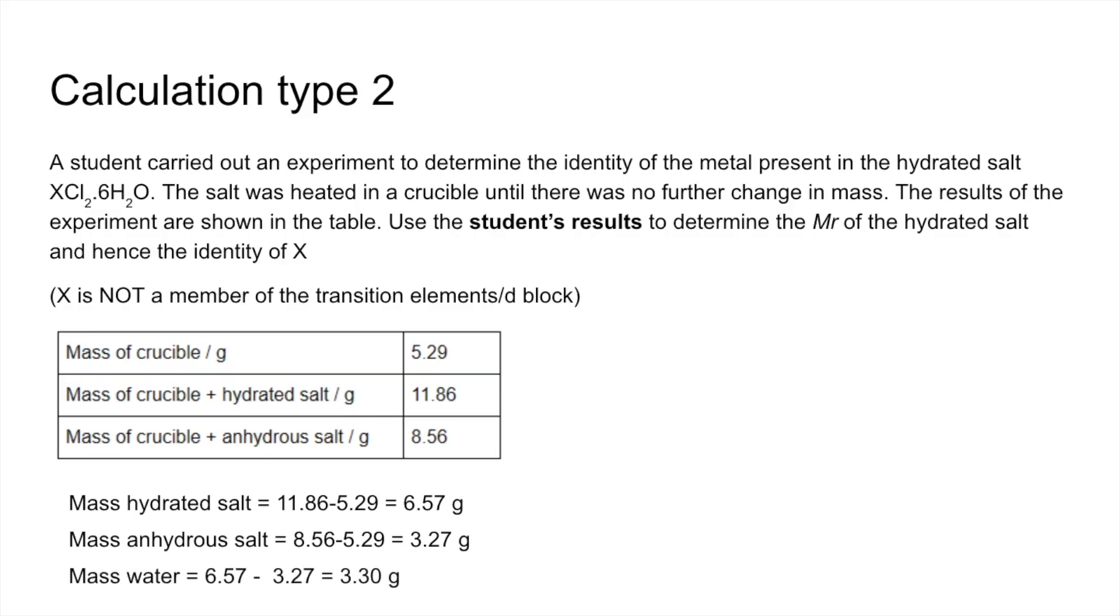So they've heated up this hydrated salt, XCl₂·6H₂O, to constant mass. And so the equation that represents that process would look like that. The first thing we're going to do is calculate the moles of water that's come off, because we know the mass of water, 3.30 grams.